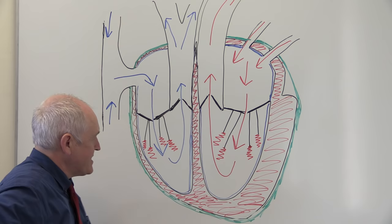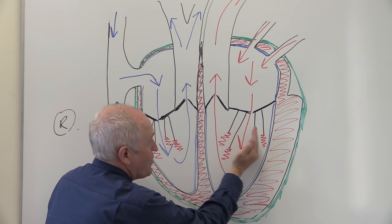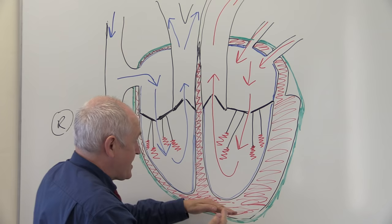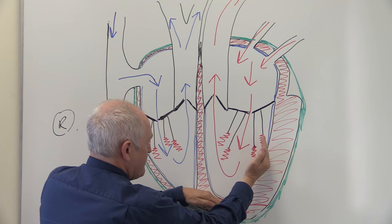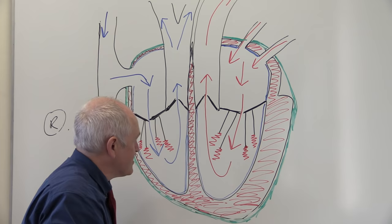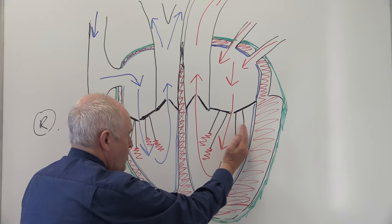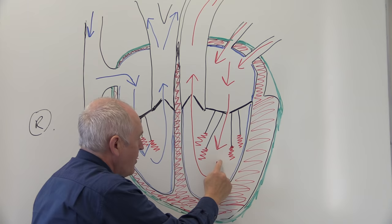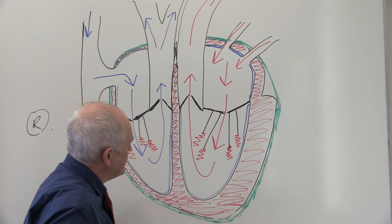Next, the ventricle starts contracting: the ventricular wall moves inward, the muscle in the septum contracts and moves upward, and the heart also twists a little - that's called cardiac twist. The combined effect of this inward, upward, and twisting movement means that the volume of the left ventricle is quickly decreased.